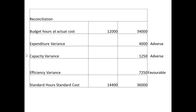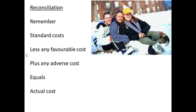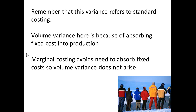I can reconcile this. Budget hours at actual costs: £34,000, with an adverse expenditure variance, adverse capacity variance, but a favourable efficiency variance, giving standard hours of £36,000. Remember: standard costs, less any favourable costs, plus any adverse costs, equals the actual cost. This variance refers to standard costing. The volume variance arises because we're trying to absorb the fixed cost into production. If we were to use marginal costing, we would not need to absorb fixed costs, so a volume variance would not arise.